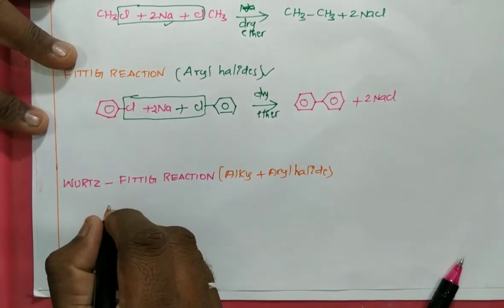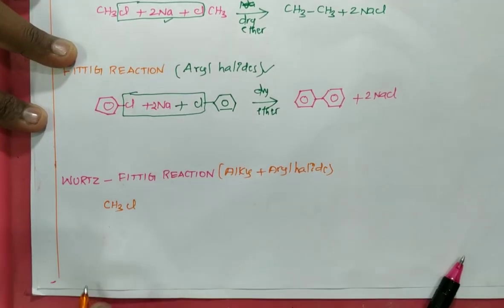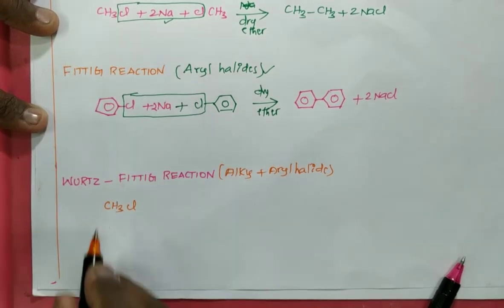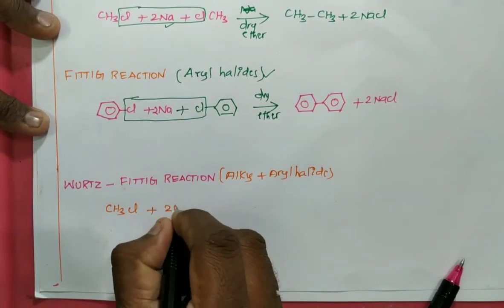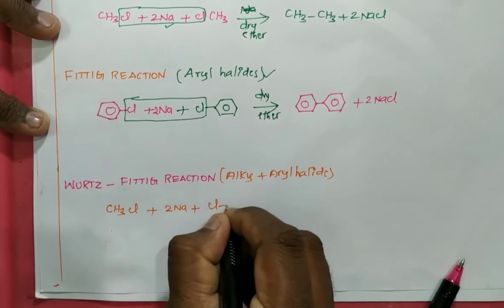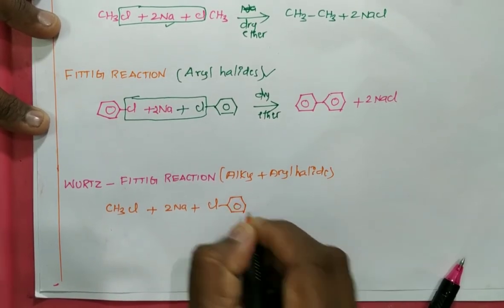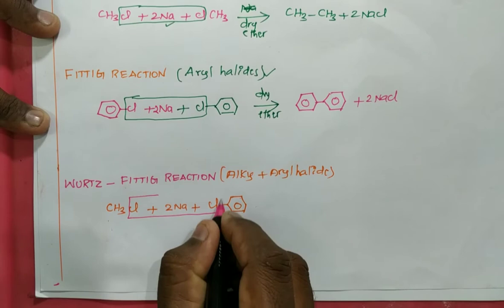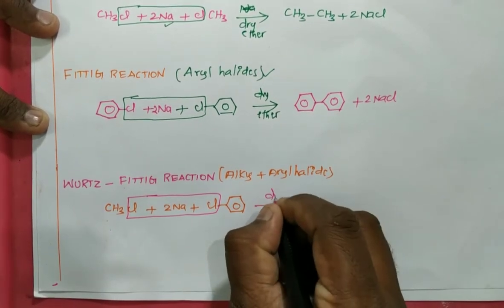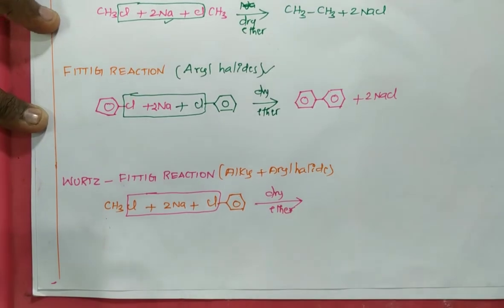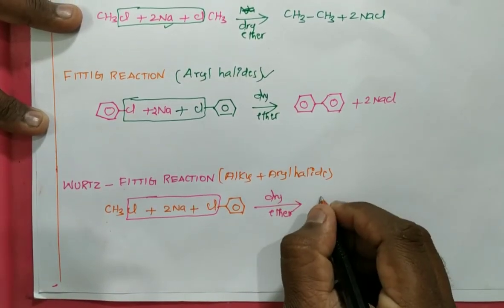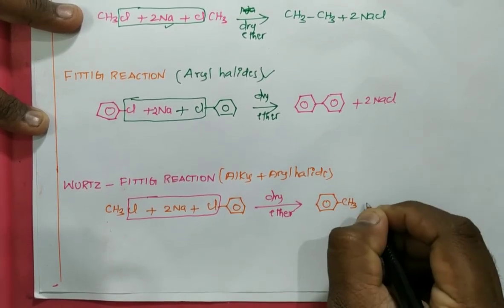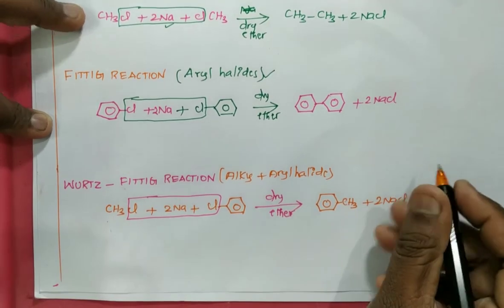For example, if we use CH3Cl as the alkyl halide, it reacts with metallic sodium and chlorobenzene (the aryl halide). Both the alkyl halide and aryl halide react with sodium in the presence of dry ether as a solvent. The product obtained is toluene along with 2NaCl.